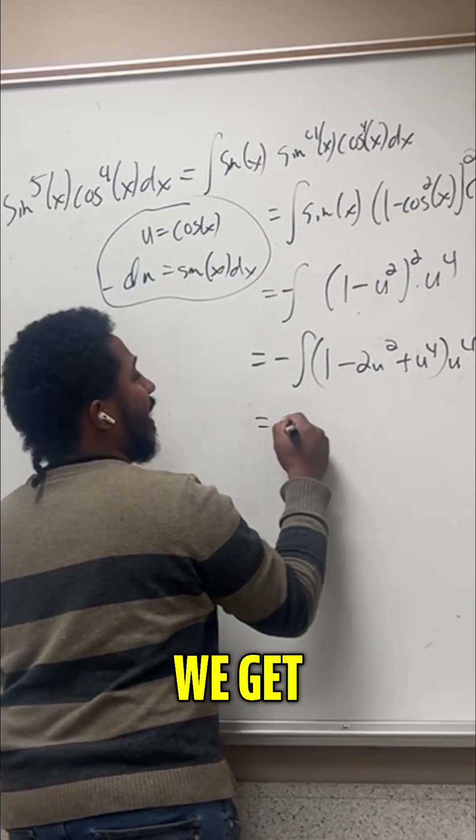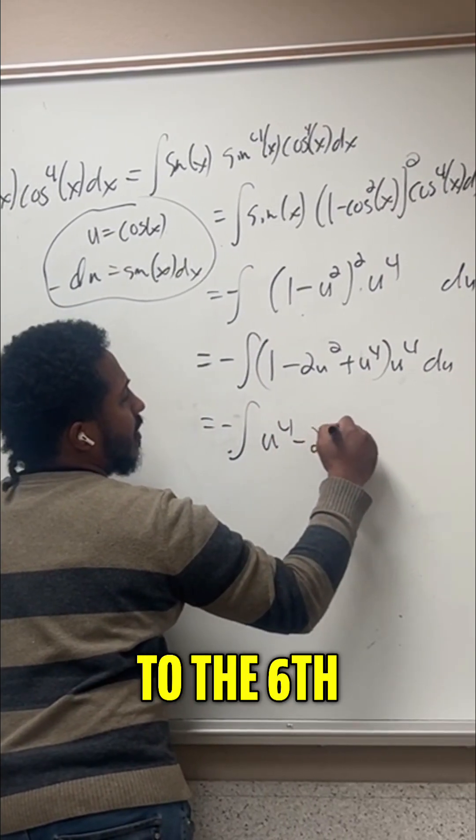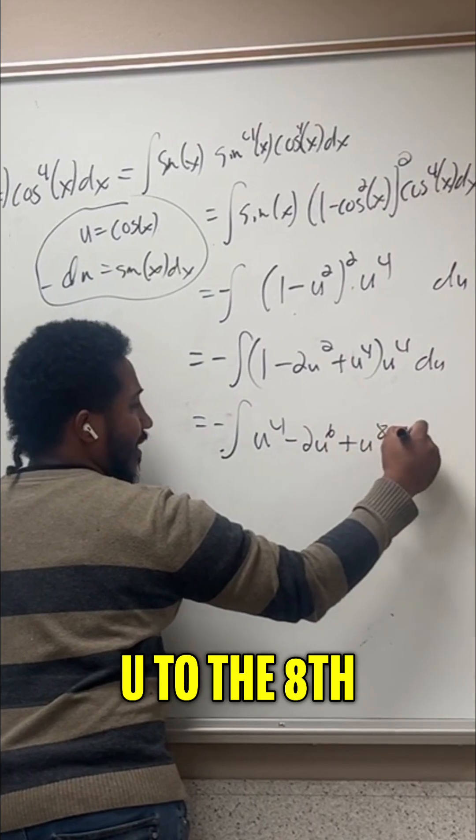Distributing that u to the fourth, we get negative the integral of u to the fourth minus two u to the sixth plus u to the eighth du.